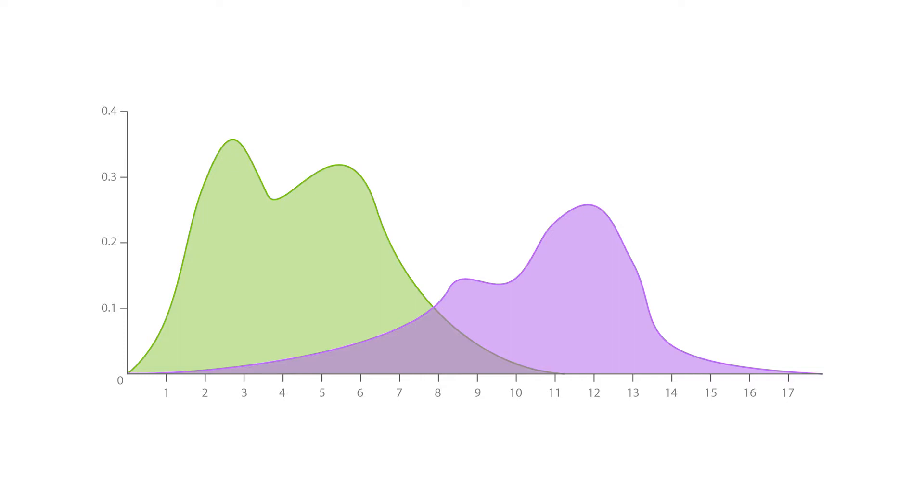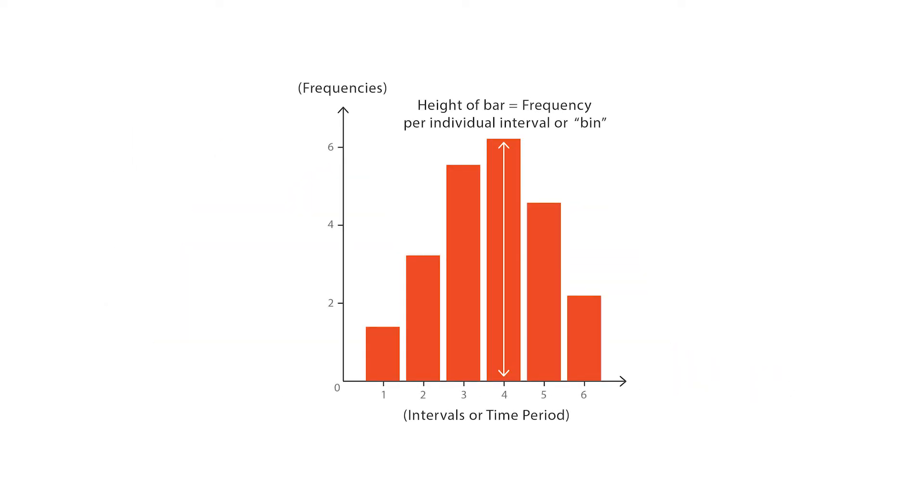An advantage density plots have over histograms is that they're better at determining the distribution shape. This is because they're not affected by the number of bins used, which is represented by each bar in a typical histogram.